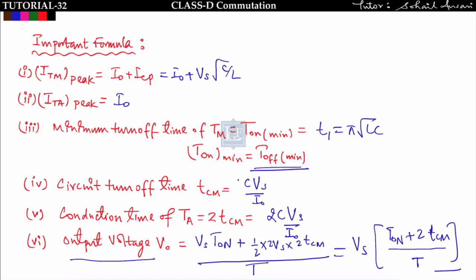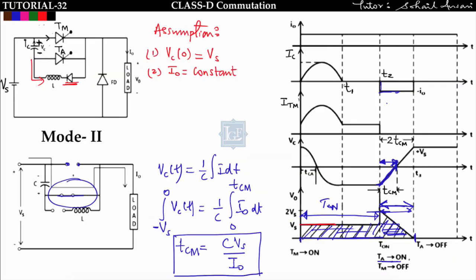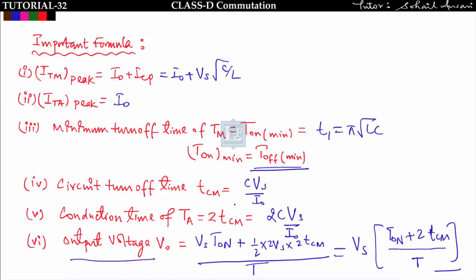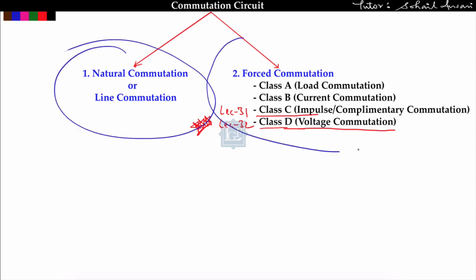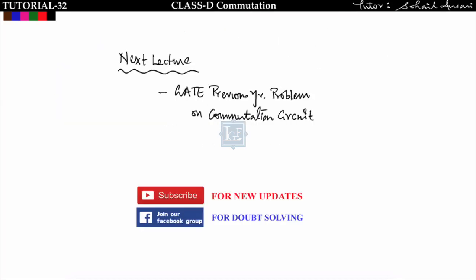Remember all these formulas to solve problems based on Class D commutation. It is called voltage commutation because a negative capacitor voltage is responsible for turning off the main thyristor in Mode 2. In this way, we have completed the commutation circuits — both natural and forced commutation. In the next lecture, we will solve previous year GATE problems based on commutation circuits.